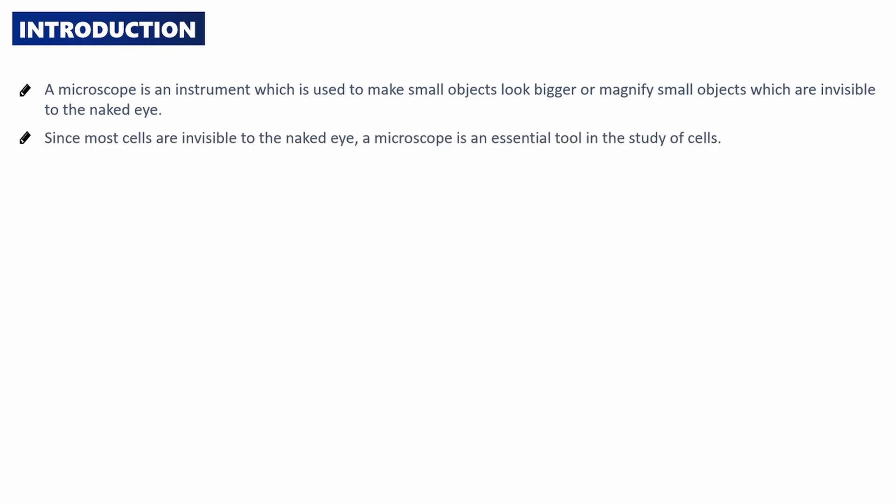Since most cells are invisible to the naked eye, a microscope is an essential tool in the study of cells. There are several types of microscopes, for example, a simple microscope and a compound microscope.